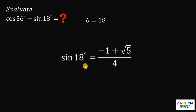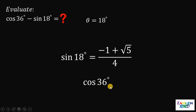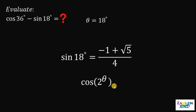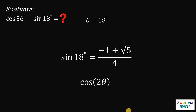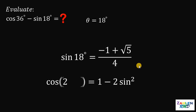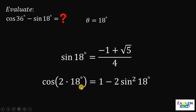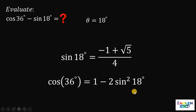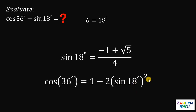Now let's get cosine of 36 degrees. Note that 36 is 2 times 18 degrees. Replacing 18 degrees with theta, we have cosine of 2 theta. Using the identity cosine of 2 theta equals 1 minus 2 sine squared theta, and substituting theta back as 18 degrees, we get 1 minus 2 times sine squared of 18 degrees.